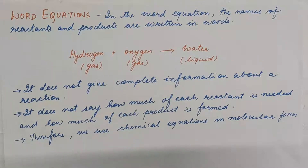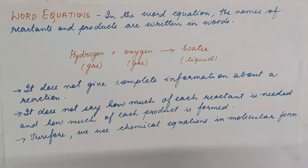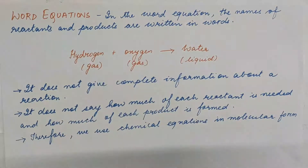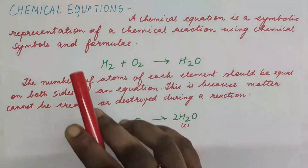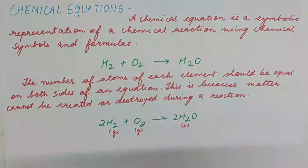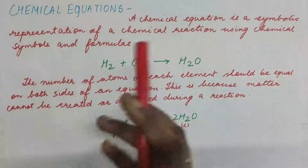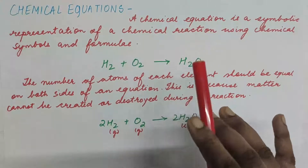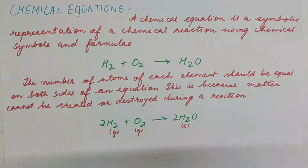There are some problems with a word equation — it does not give us complete information about a reaction. We don't know how much of each reactant is used up, or how much product is formed. Therefore, we use chemical equations or molecular equations to represent a proper chemical reaction. A chemical equation is a symbolic representation of the chemical reaction using different chemical symbols and formulas.